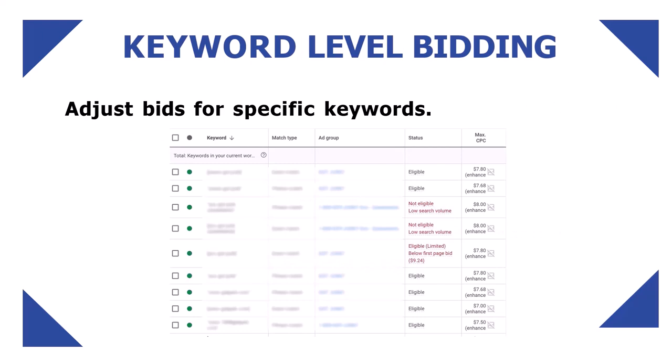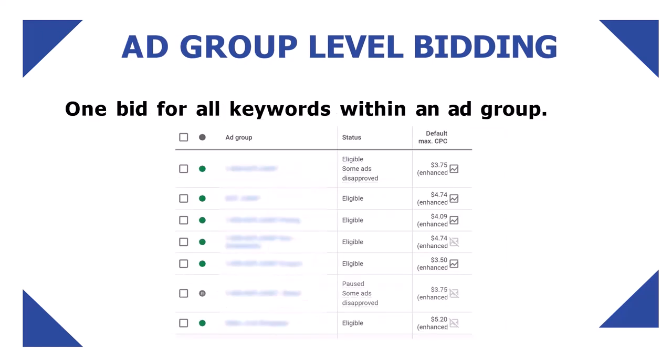Now let's talk about bidding at the keyword level. Bidding at the keyword level is beneficial because it allows you to adjust bids for specific keywords based on their performance. You can see the performance metrics for each keyword and make changes accordingly, which helps you optimize your bids and get the most out of your campaign.